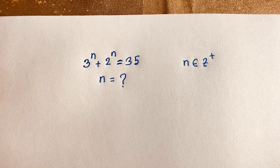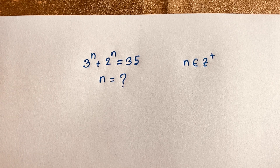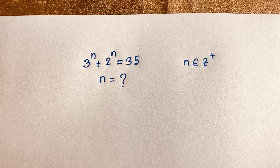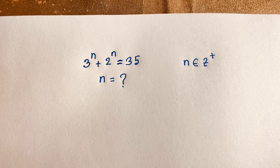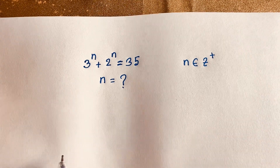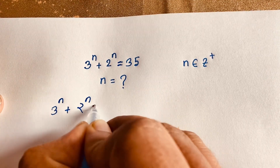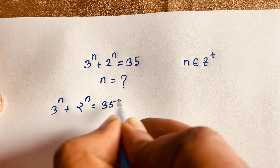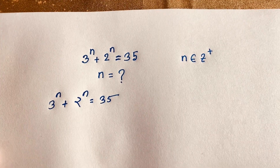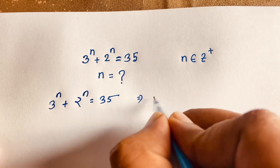Hello everyone. In this video we solve an interesting exponential equation — it is a math olympia question. The question is: 3 to the power n plus 2 to the power n is equal to 35. n is equal to what? Here n is a positive integer, so our target is to find n. How do we solve this exponential equation?